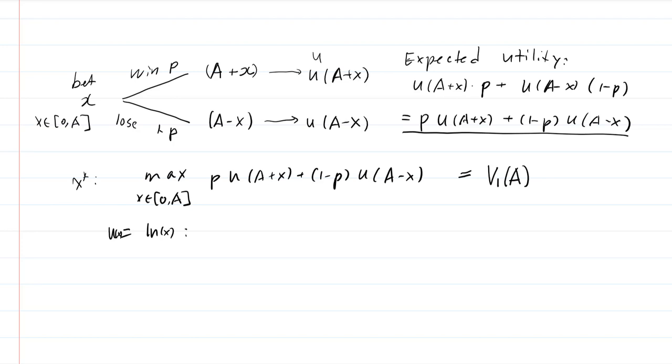So what we have is that we have this maximization problem. x is between 0 and A, and we have P, and log A plus x, and plus 1 minus P, and log A minus x. We want to solve this problem for all P. P is between 0 and 1.